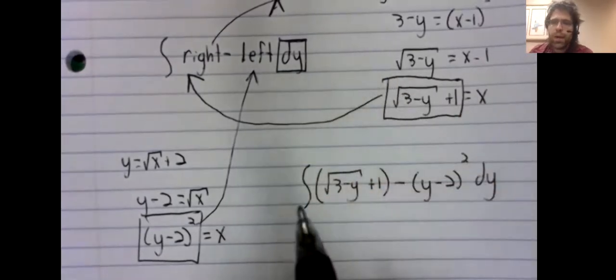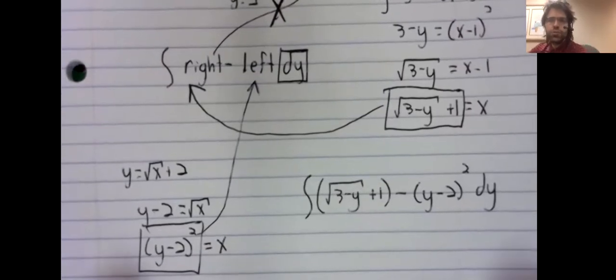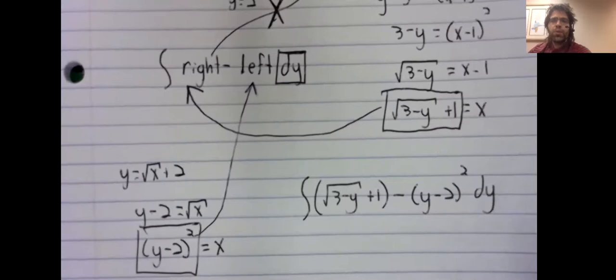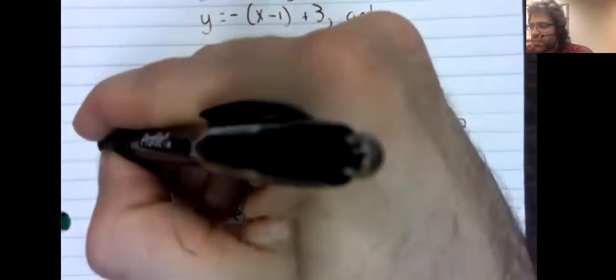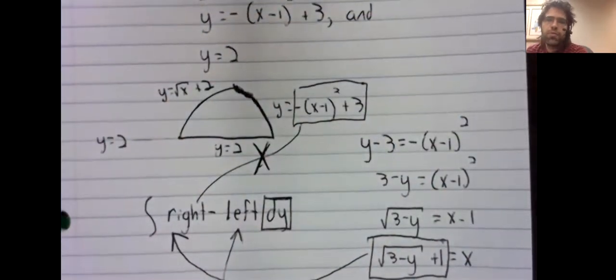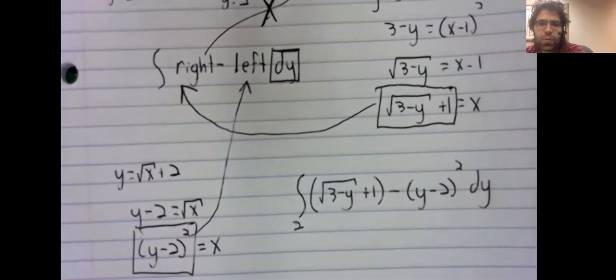But what about our limits of integration? They need to be in terms of y too. And what that means, remember, is that instead of our limits of integration being a left hand and a right hand interval, our limits of integration are going to be the bottom of the curve and the top of the curve. And one of those is easy. The bottom of the curve is already given in terms of y. It's y equals 2.